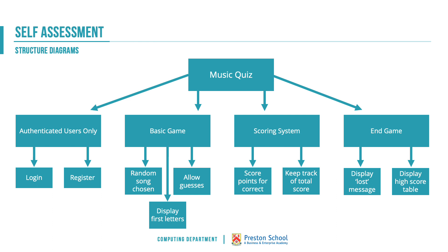Here is an example of an answer. This doesn't necessarily include absolutely everything that might be in the application but it does include the key things. I broke mine down into authentication — that's going to deal with logging in, logging out, and registering the user. The basic game elements, e.g. choosing the random song, allowing guesses, displaying the first few letters. The scoring system: giving points, taking away points, keeping track of the total, and then our end game element.